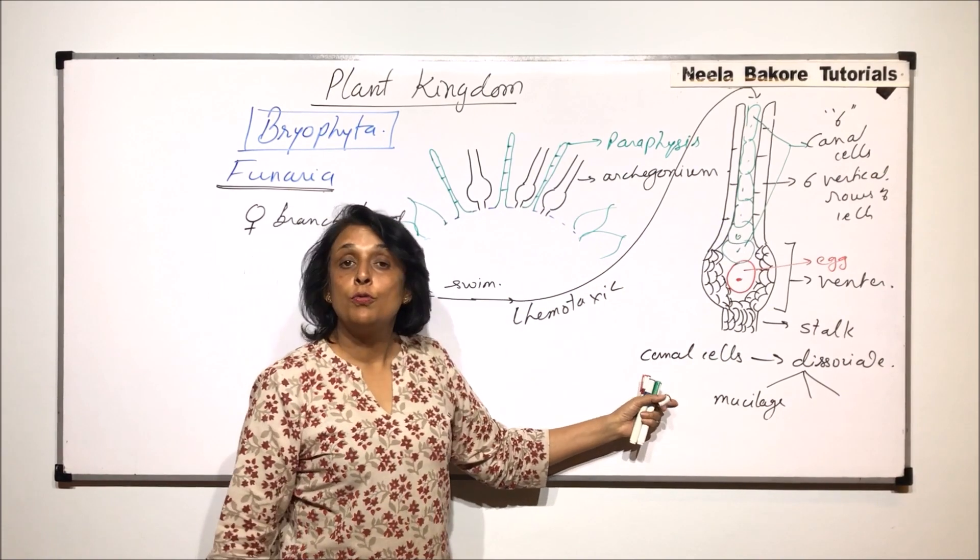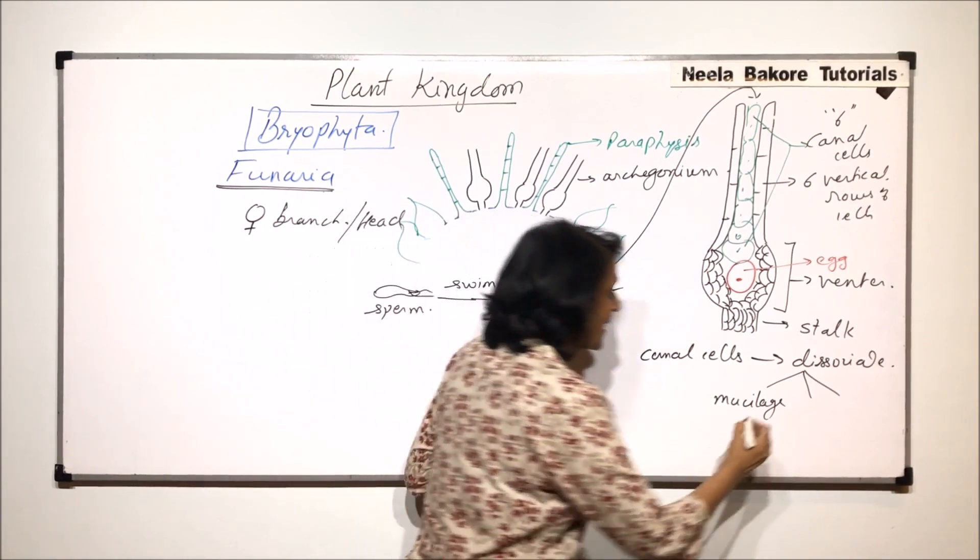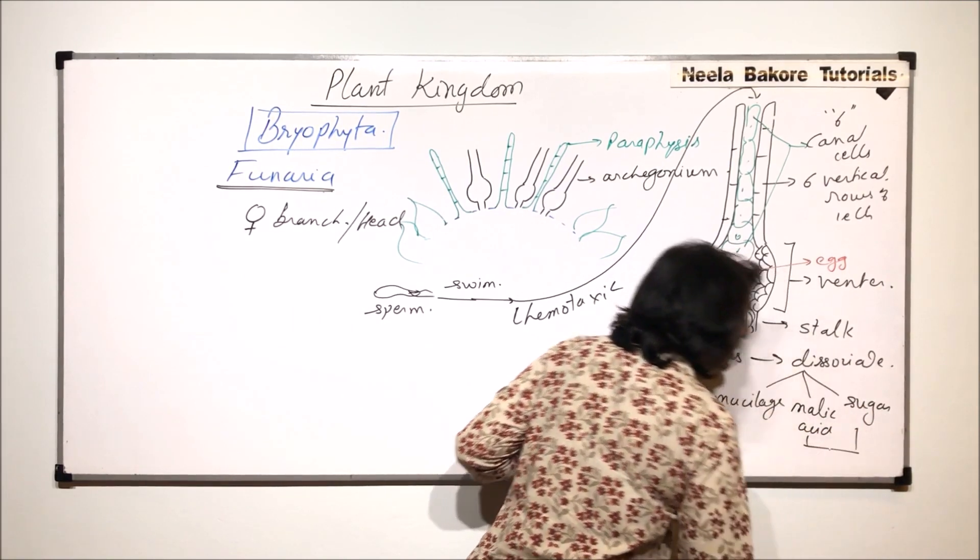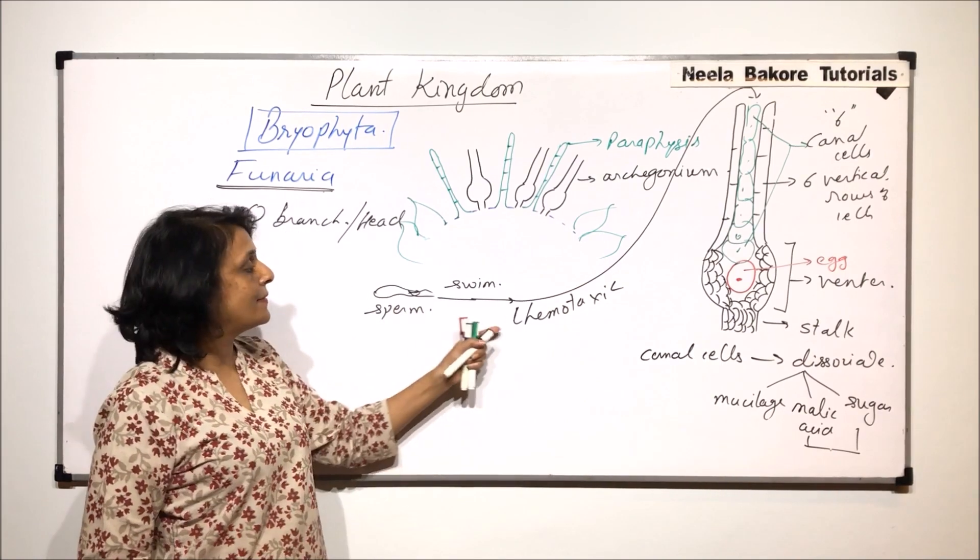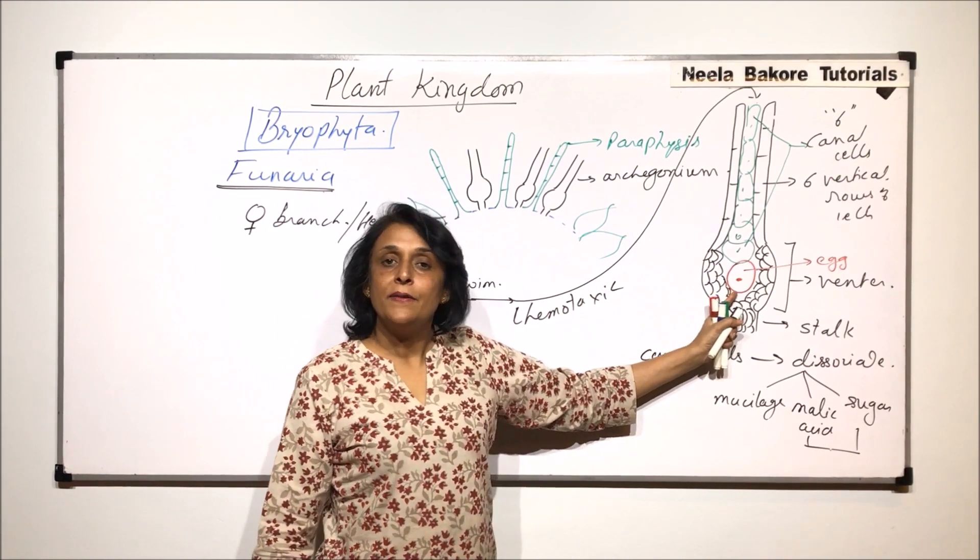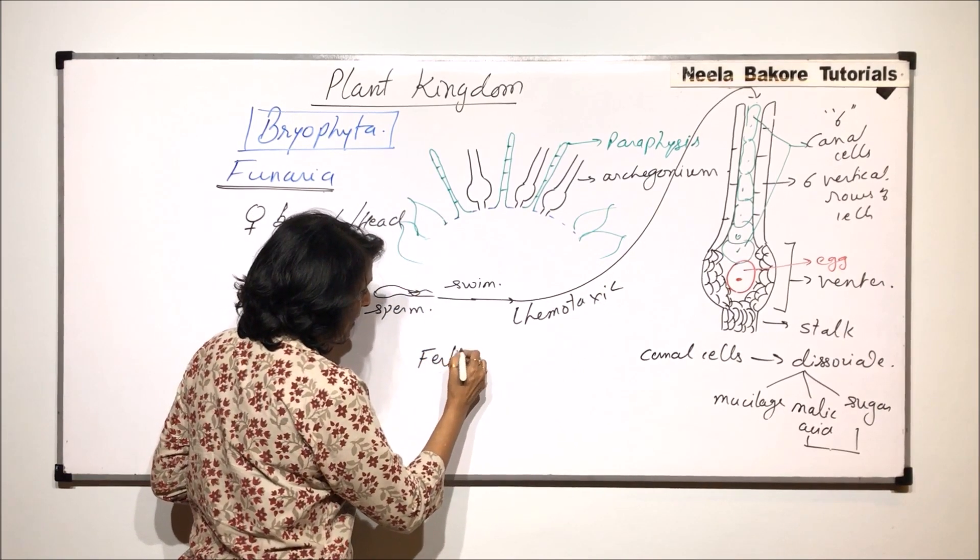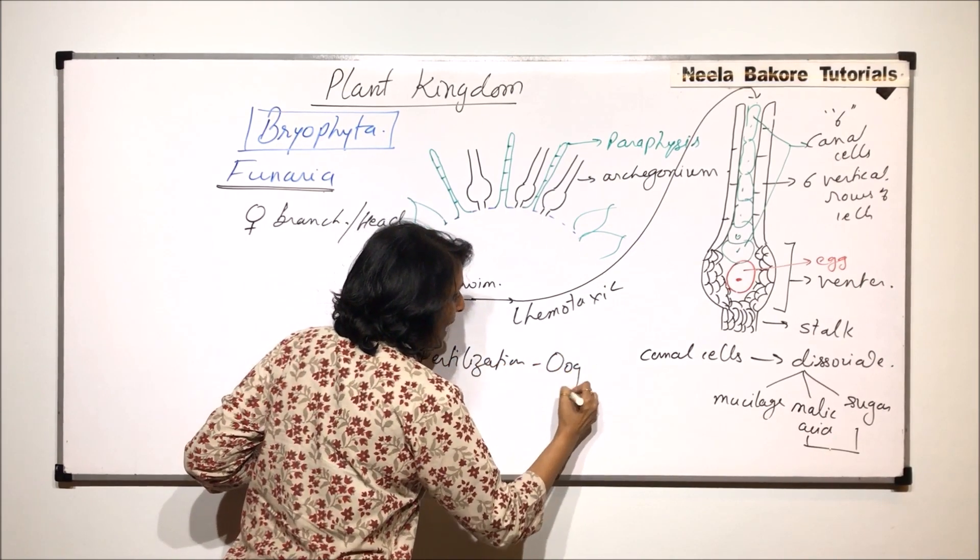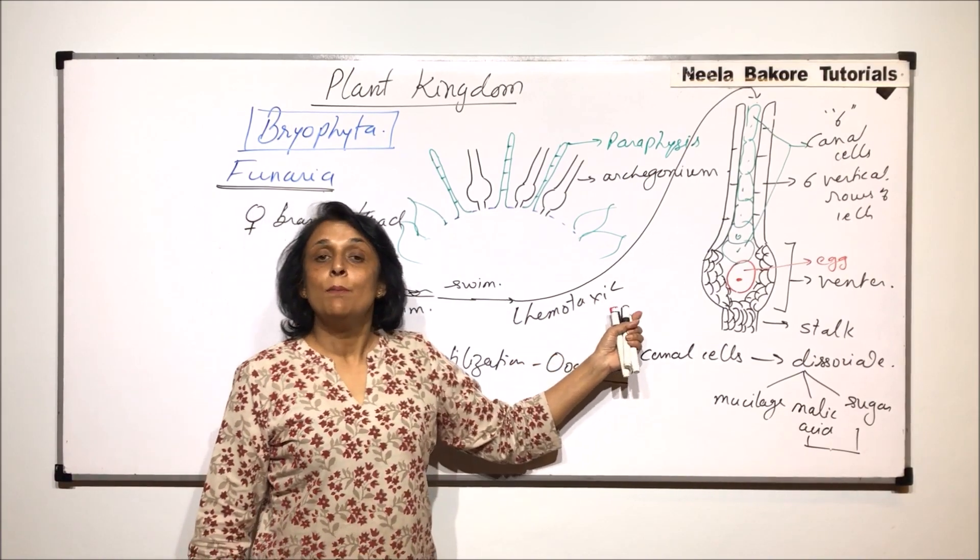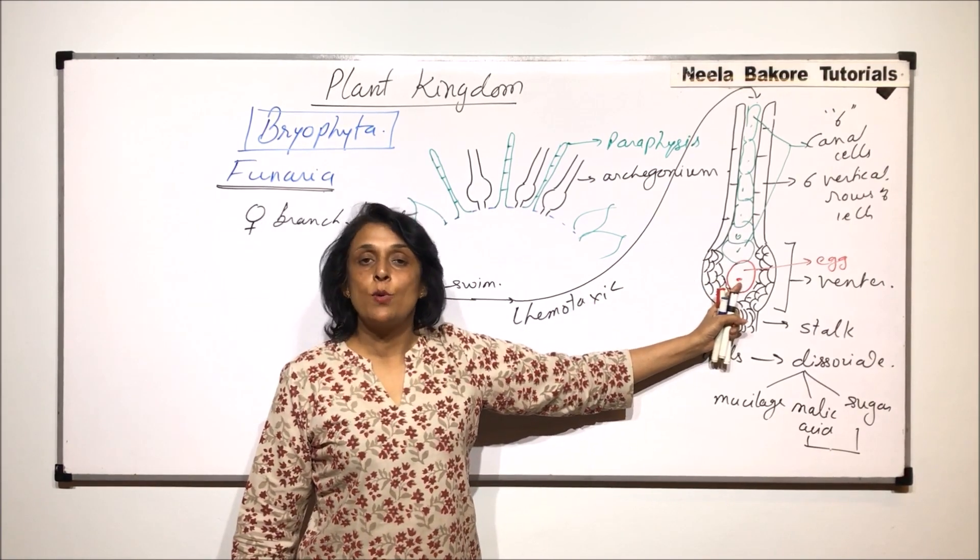Mucilage is a slimy substance which is going to lubricate the path of the male gamete. So as the male gamete reaches here, these cells, they start to dissociate. A mucilage substance is formed through which the sperms will enter into the canal and up to the venter. The second is malic acid and sugar. These are those two chemicals which are responsible for attracting the male gamete up to the egg. So now when the male gamete reaches up to the egg, fertilization is going to take place.